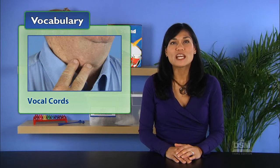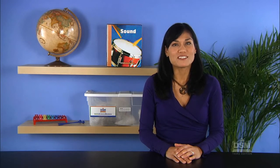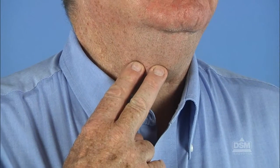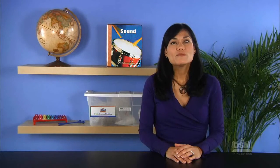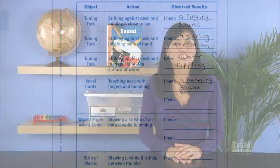Inform the students that their vocal cords are located in their throats and produce the sounds that their mouths shape into speech. Instruct the students to hum and put their fingers on their throats. Have them observe what they feel and hear and record their observations on the activity sheet.